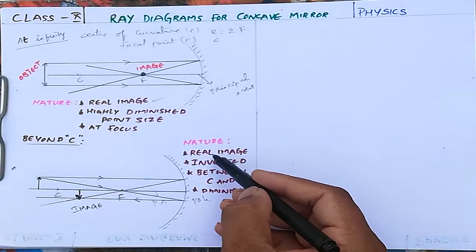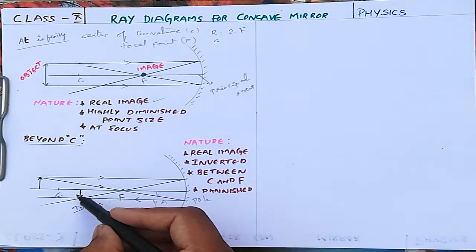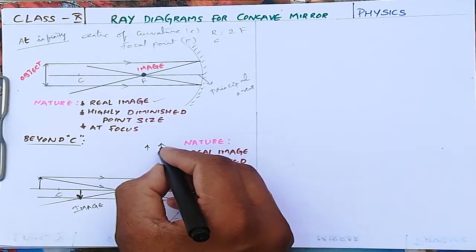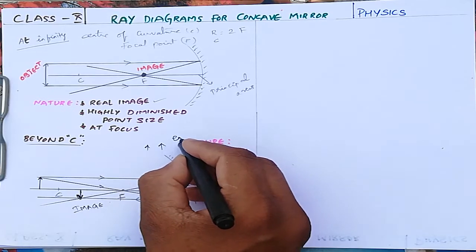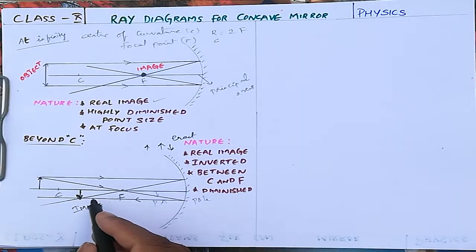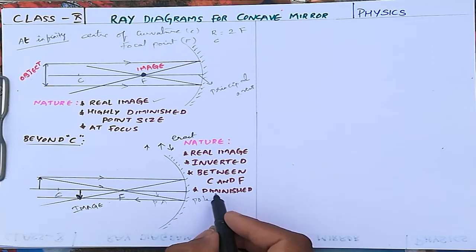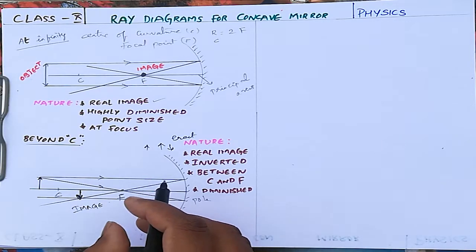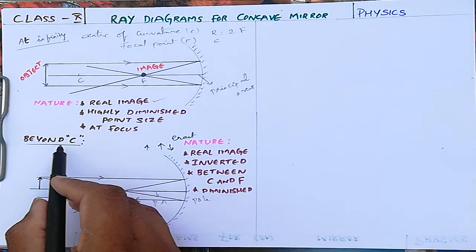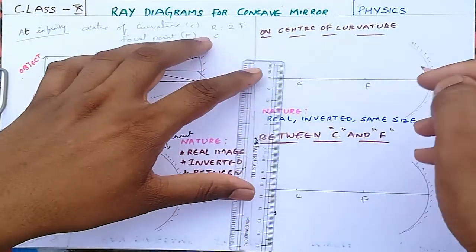The image formed is a real image — it appears in front of the mirror. It is inverted: if the object is erect (straight), the image is reversed. The image forms between C and F, and its size is diminished — somewhat decreased compared to the object. This completes the second position, beyond C.